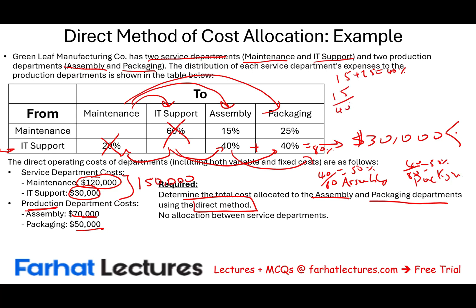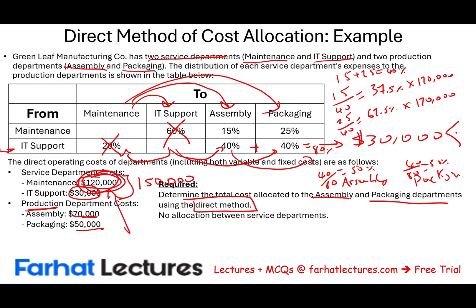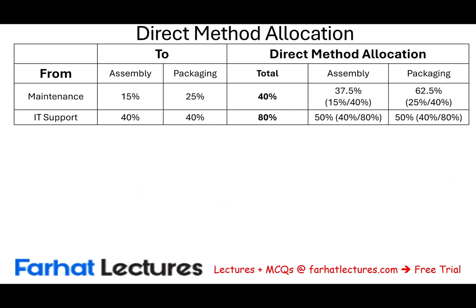We find the relative value of each: 15 divided by 40 gives us 37.5% for assembly, and 25 divided by 40 gives us 62.5% for packaging. We then multiply these percentages by $120,000 to allocate the full maintenance cost directly to assembly and packaging, without routing through the other service department. Each service department allocates costs solely to the production departments.